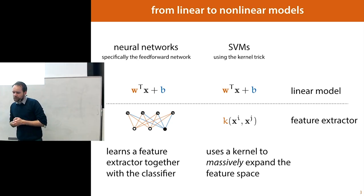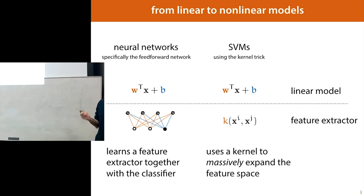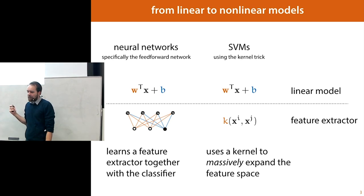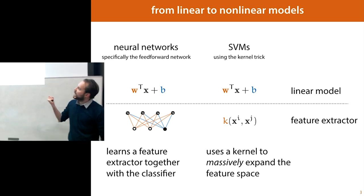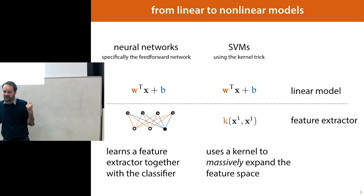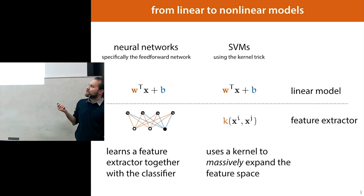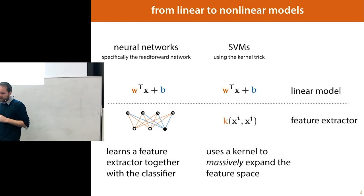We'll talk about neural networks in the first half, and in the second half we'll talk about support vector machines, which also includes our final loss function. Support vector machines, as they are usually used, are also a linear classifier, but they don't have a learnable feature extractor. Instead, they use a kernel — a very powerful way to very cheaply, without a lot of computation, expand your feature space massively using kernel functions, adding loads of features to your data set.